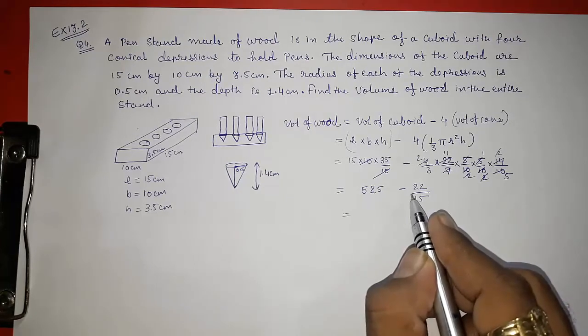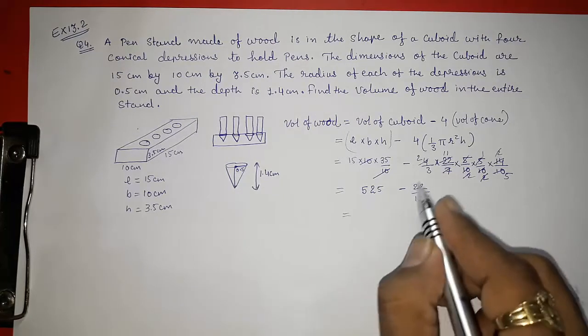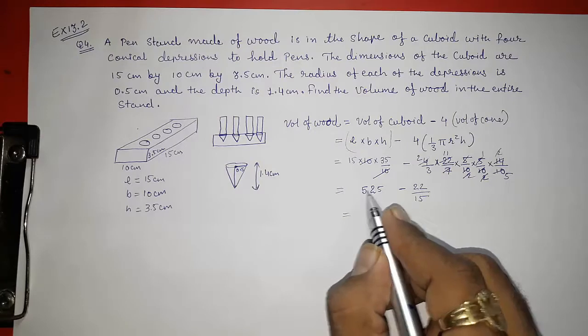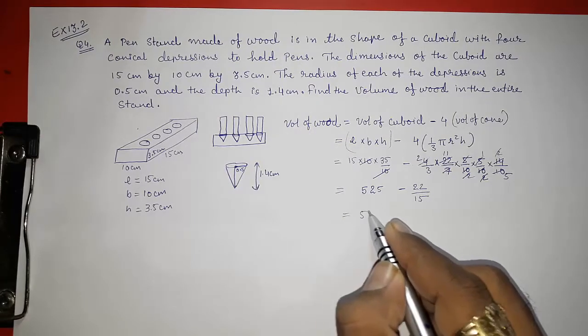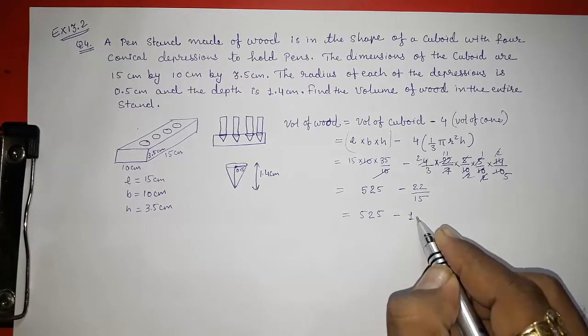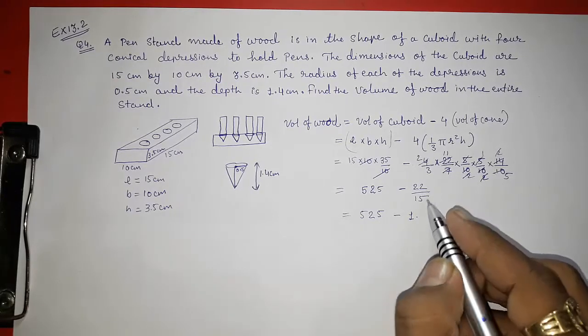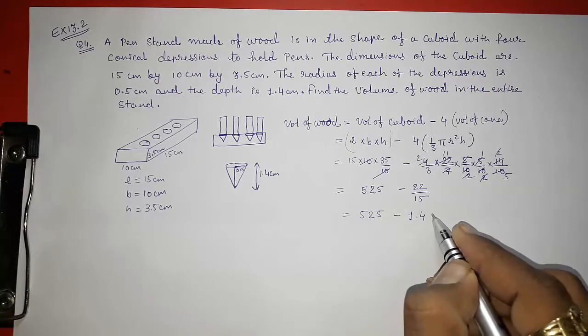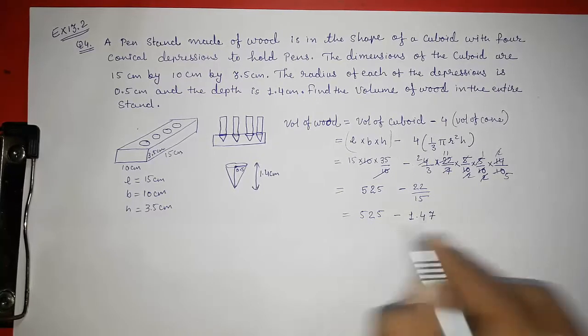Now we have to subtract. For subtracting first, we have to convert it into decimal or we can find out the LCM and then we can. I am going to convert it into decimal. 22 by 15, so 15. There are 15, 7 will be remaining, of course 60. I think 1.47 will come.